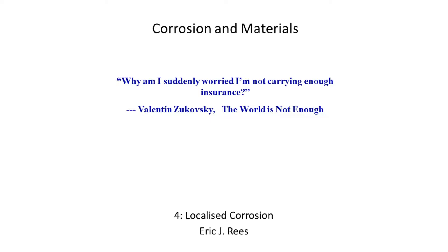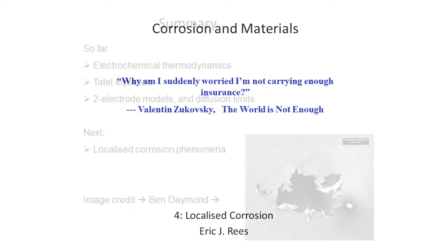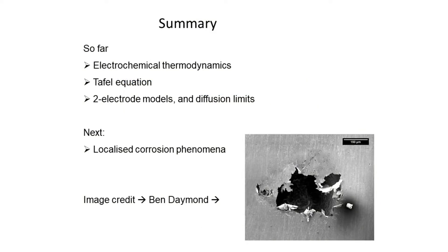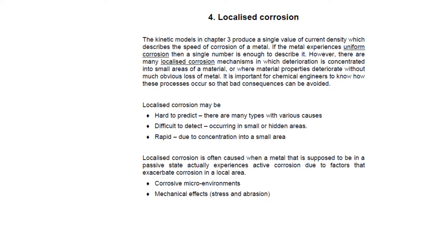In that case, we might end up with the unpleasant thought that probably we should have bought more insurance — a thought we never want to have about something we've designed. Therefore we need to learn about all of the localised corrosion phenomena. What the 9 or 10 localised corrosion phenomena in Chapter 4 have in common — and there are a few more in textbooks like Fontana — is that localised corrosion phenomena are relatively hard to predict, difficult to see or detect, and often relatively fast.